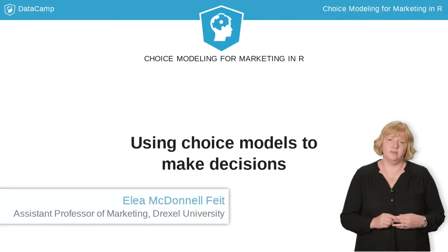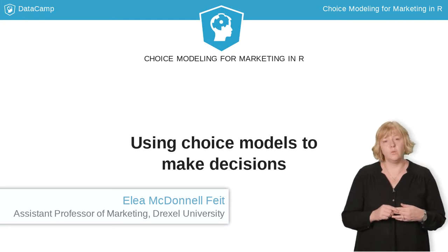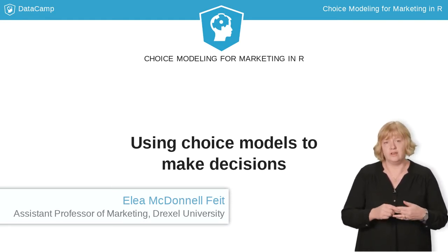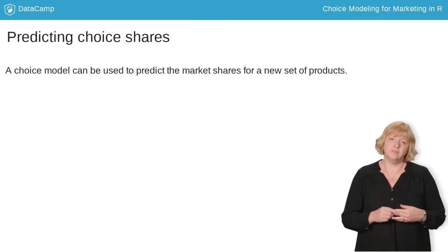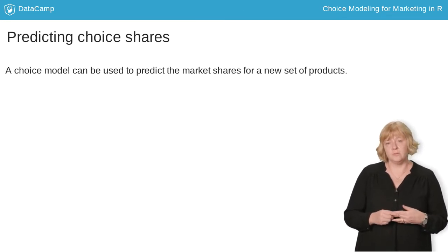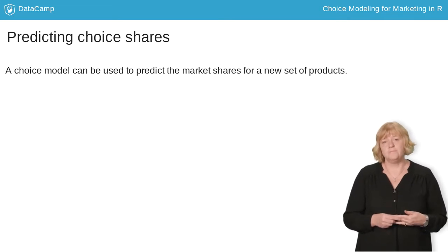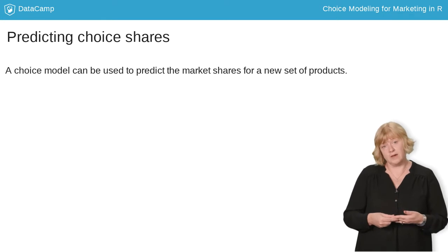The real power of a choice model is that it allows us to make predictions about what people will choose when presented with a new set of options. Market share is the percentage of people who choose a particular product from the set that is available in the market. We can predict market shares for a set of products using the choice model.